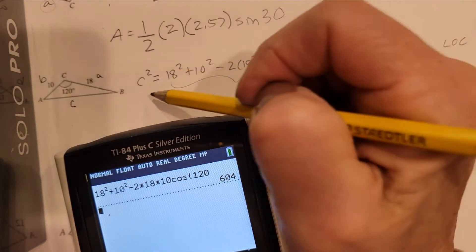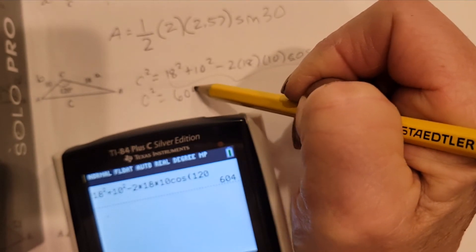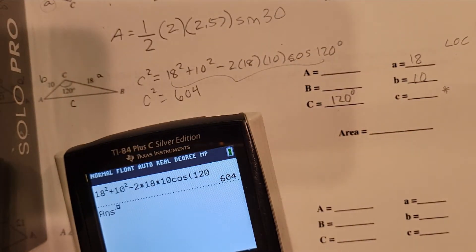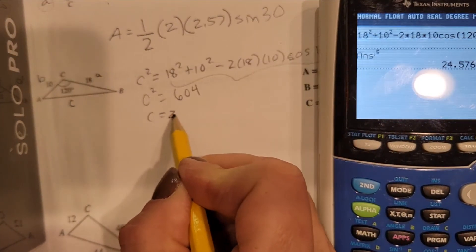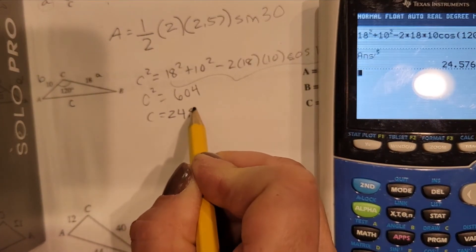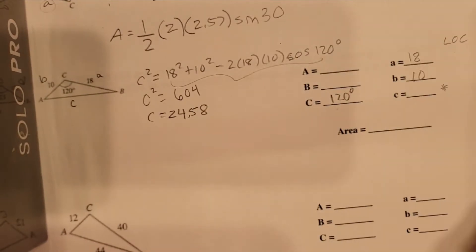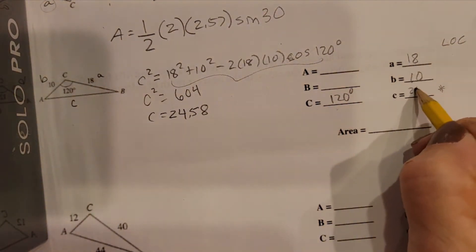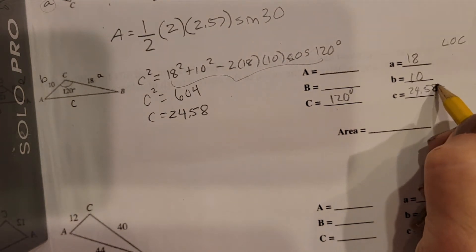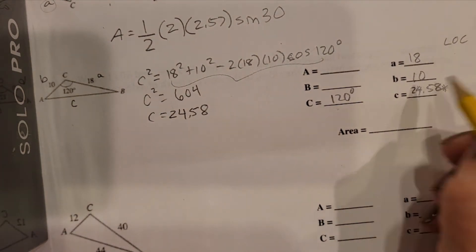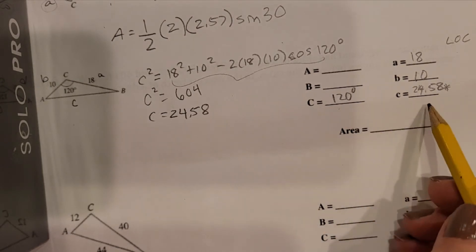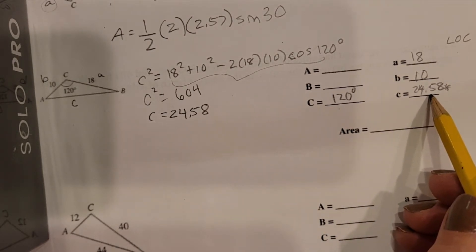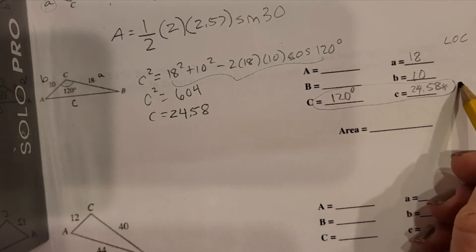604 seems really big, but keep in mind that is C squared. So I'm going to do the square root of that. I always just do it to the half power, which is the same thing, which you learned in math class, hopefully. So 24.58 is what I'm getting. Is that a reasonable answer? 24.58. Yeah, why? Because 120 has to be the biggest angle since it's obtuse, and so this has to be the biggest side, and it is. And now that I have a pair, I can transition over to the law of sines.